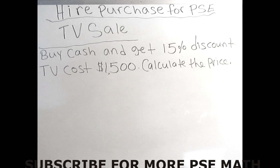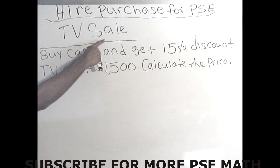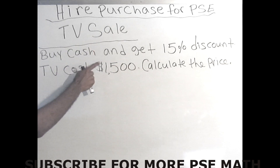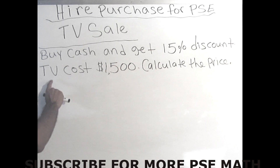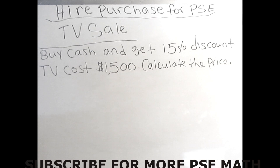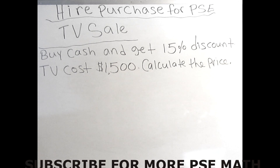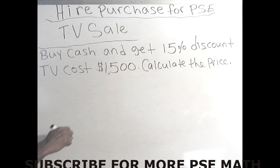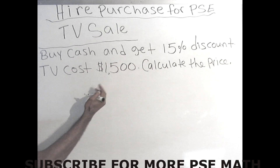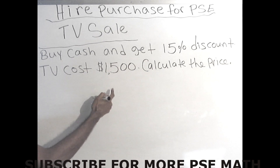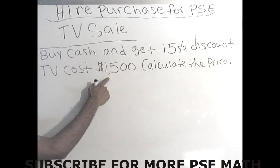Let's start and go straight into the problem. It says hire purchase — it's a TV that is on sale. It says: buy the TV cash and get 15% discount, and the TV costs $1500. We want to calculate the cash price. Because we're buying the TV cash, we will get a 15% discount, so we'll pay a little less than $1500. The first thing you want to do is find out how much that 15% discount is on the $1500 TV.